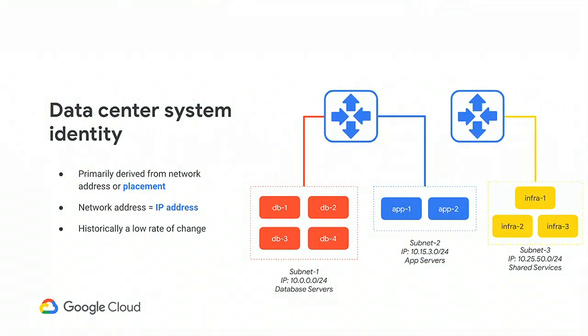We have what I refer to as network identity. When you talk about how you identify systems from a network perspective, IP addressing and subnets exist pervasively everywhere. What I'm specifically talking about is the importance of what an IP address actually means about the identity of a system — like knowing these IP addresses are my database servers, or this range is a DMZ where I want to apply certain traffic controls. There's typically a pretty low rate of change with subnets and VLANs in your on-premise network.